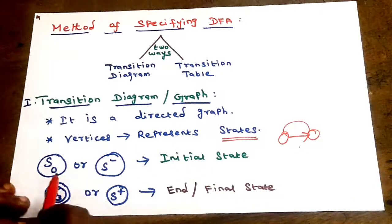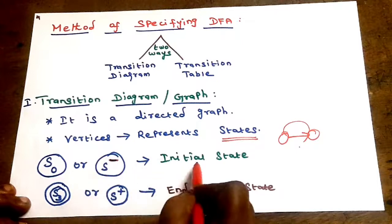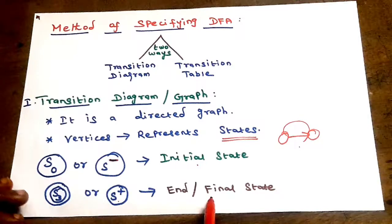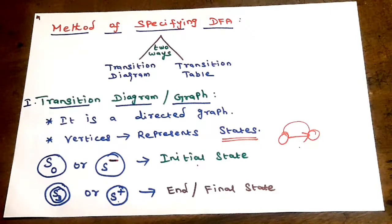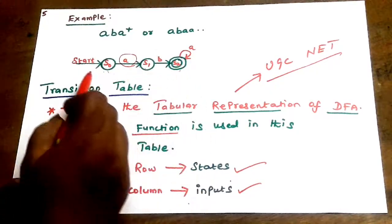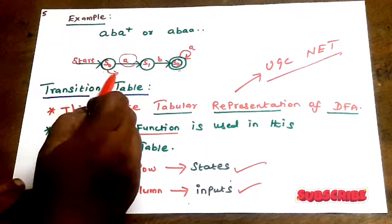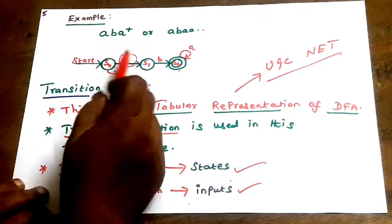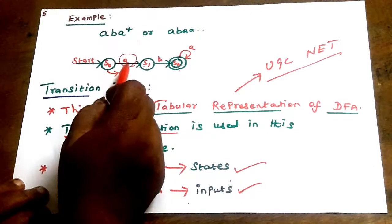The transition function is represented by the edges. The initial state is marked with an arrow. The final state is represented by a double circle. In the transition graph, the starting state and final state are represented as vertices, and the edges represent the transition function from one state to the next state.